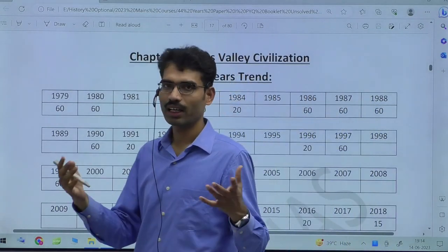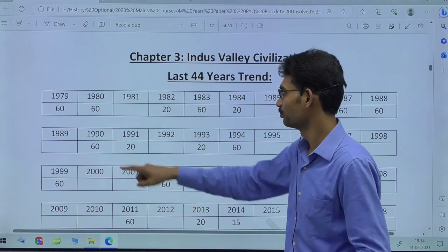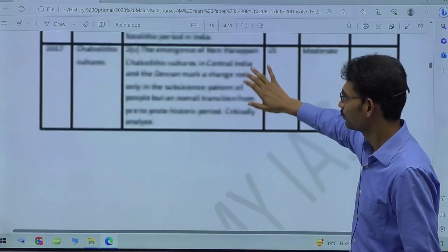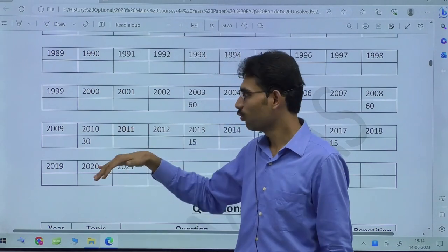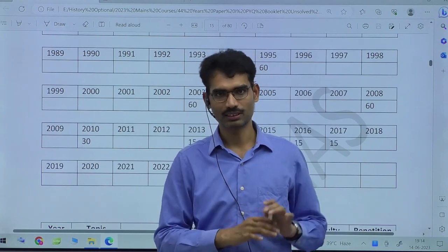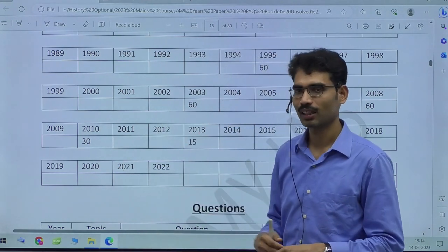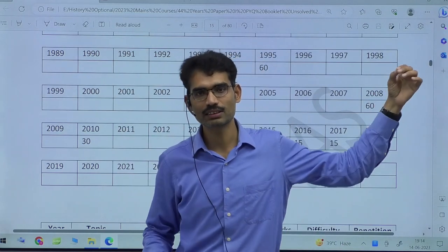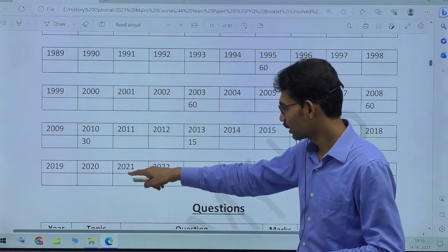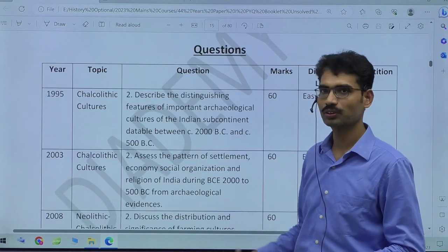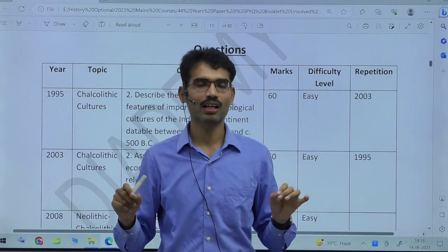Next is the Indus Valley Civilization. Every student knows this is very important because more questions come from it in the UPSC exam. One reason the Prehistory chapter appeared blank is that most of those questions actually come from the map question section. I've shown how in a single year, six Chalcolithic sites appeared in map marking — that's 15 marks from map questions alone. UPSC will not leave any area mentioned in the syllabus.